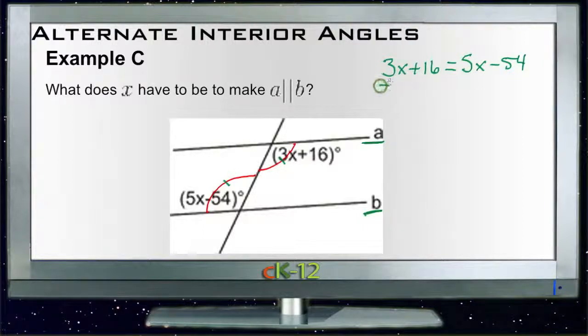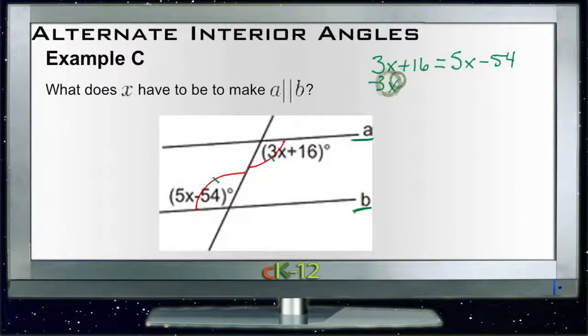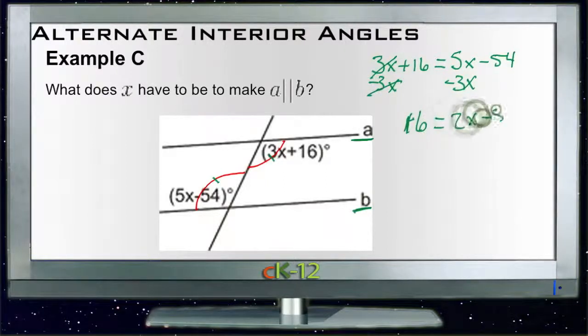So we'll subtract 3x from both sides. There's my pen again, moving things around. Minus 3x, minus 3x goes away over here on the left, leaving us with 16. 16 is equal to 2x minus 54.